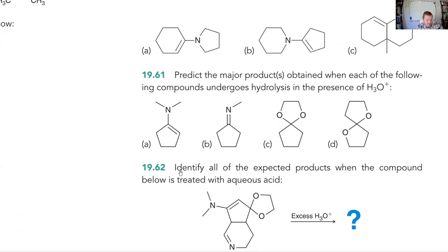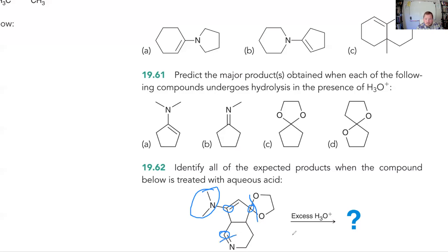If you happen to have a very complicated molecule with an enamine, an imine, and an acetal all in the same molecule, and you expose this to excess acid, you're going to wind up hydrolyzing all of those — adding a carbonyl group at each site. This is just asking the same thing as above, just three times on the same molecule.